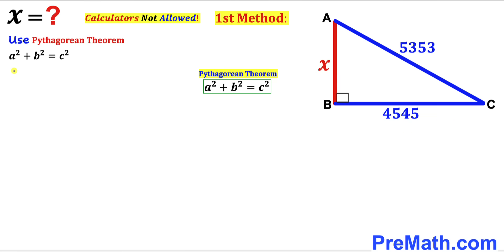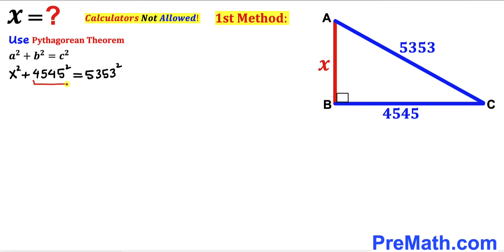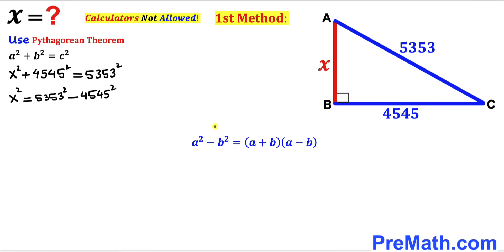Let's fill in the blanks in the Pythagorean formula. We write x² + 4545² = 5353². Now we move the 4545² term to the right-hand side. Since we are not using calculators, let's recall the famous identity a² − b² = (a + b)(a − b).